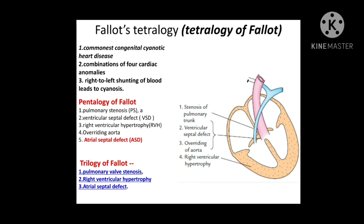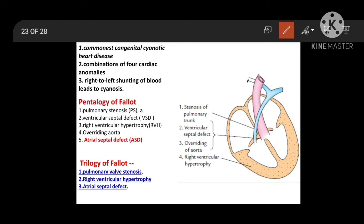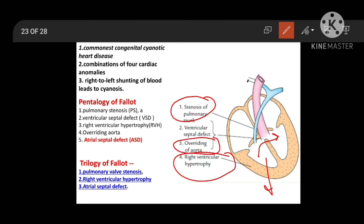Tetralogy of Fallot is the most common congenital cyanotic heart disease and is a combination of four cardiac anomalies: pulmonary stenosis, which decreases flow from the right ventricle leading to right ventricular hypertrophy; VSD, where increased right ventricular pressure causes right-to-left shunting of blood leading to cyanosis; and overriding of the aorta due to the spiral septum developing very anteriorly.